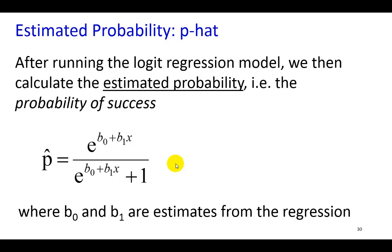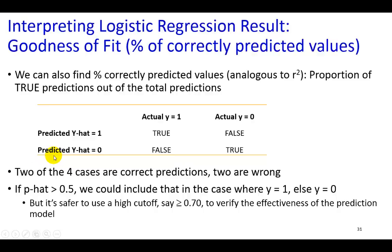Now, after running the logit regression model, we then calculate the estimated probabilities. That is, the probability of success. So, these terms here, little b sub zero, little b one, these things here, these are estimates from running the model. And so, we hook them up into this, and then we obtain our p hat, which is the estimated probability value. And from the result, we can also find the percent of correctly predicted values, right here.